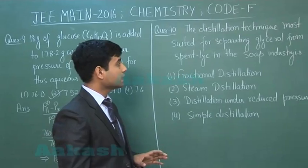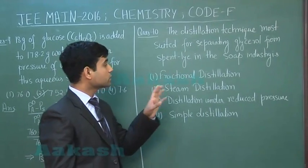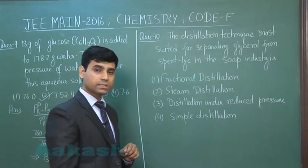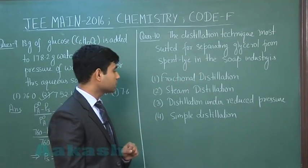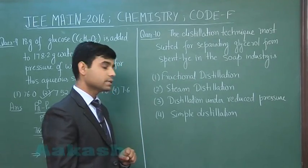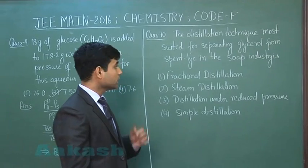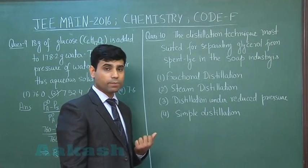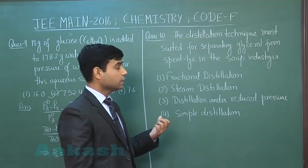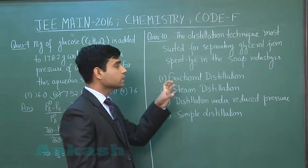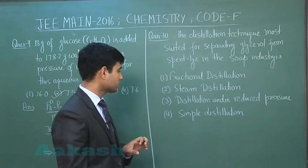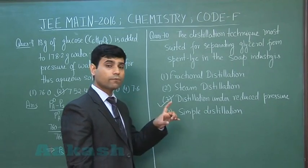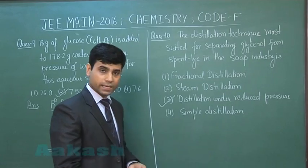The next question asks: the distillation technique best suited for separating glycerol from spent lye in the soap industry is — option 1: fractional distillation, option 2: steam distillation, option 3: distillation under reduced pressure, option 4: simple distillation. We know glycerol decomposes before its boiling point at one atmospheric pressure, so the pressure should be reduced while separating these two. The correct answer is option number 3 — distillation under reduced pressure.